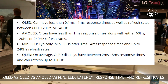OLED can have less than 0.1ms response times, as well as refresh rates between 60, 120 Hz, or 240 Hz. AMOLED often also has less than 0.1ms response times, along with either 60 Hz, 120 Hz, or 240 Hz refresh rates. Mini-LEDs typically offer 1ms to 4ms response times and up to 240 Hz refresh rates. QLED displays on average have between 2ms to 8ms response times.